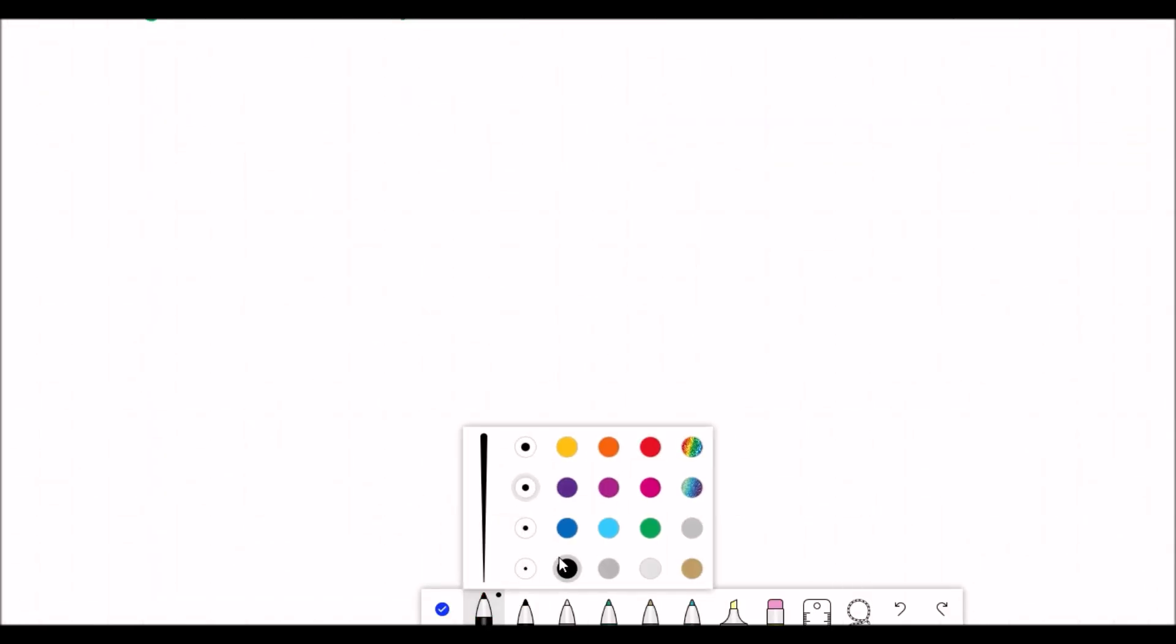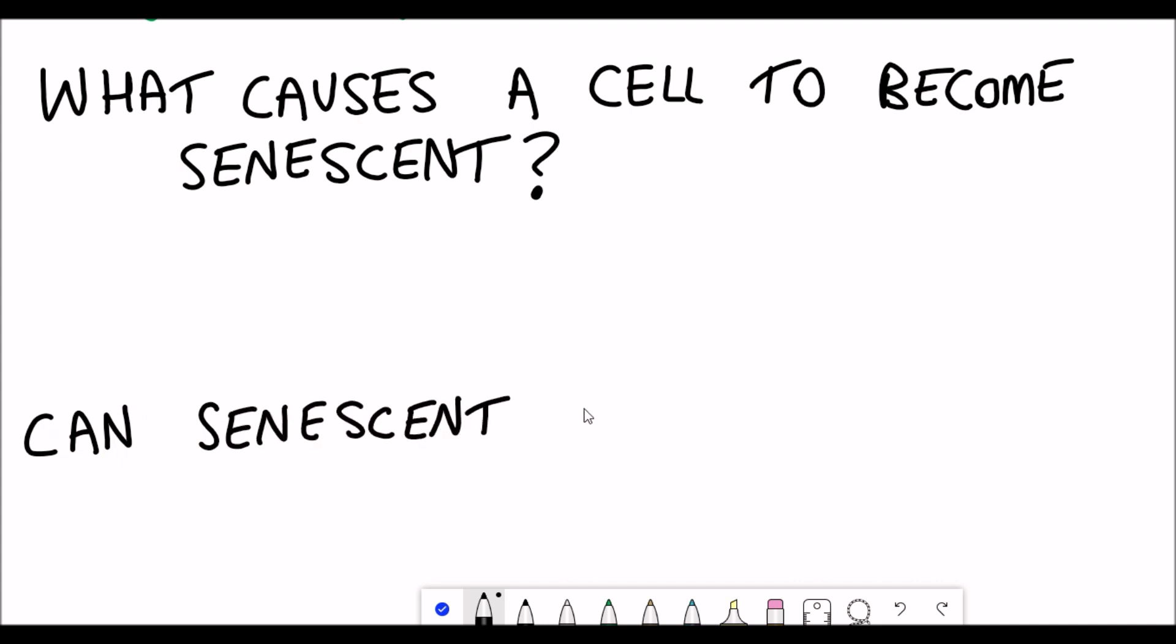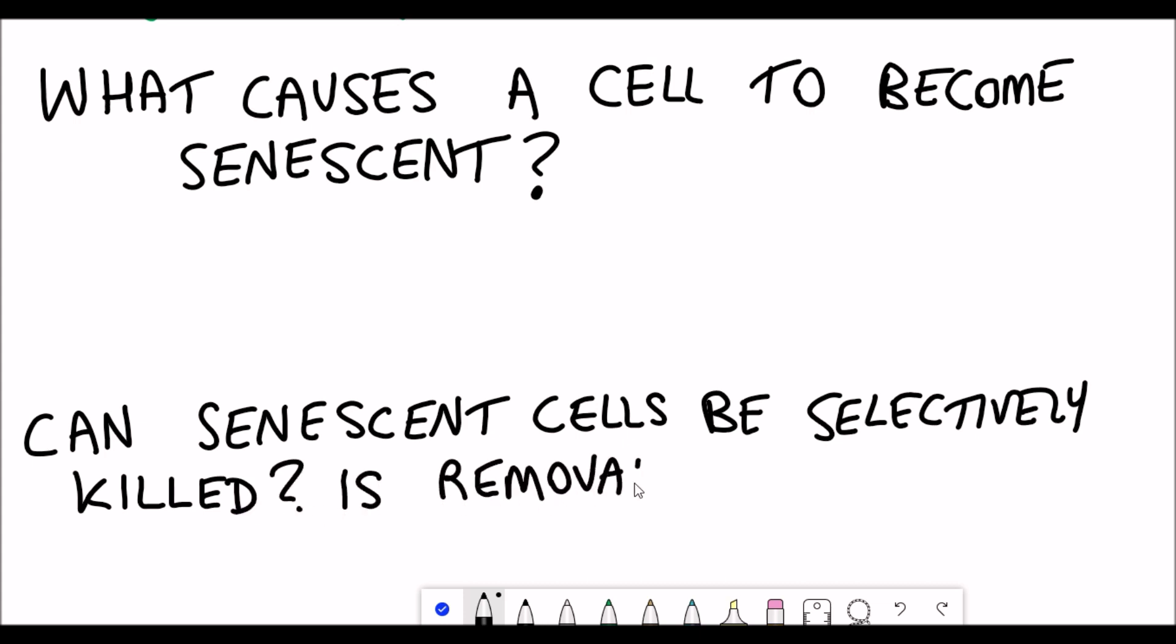Due to both these positive and negative aspects, senescent cells are very interesting to study. Some of the questions being addressed are: what actually causes a cell to become senescent in the first place, can senescent cells be selectively killed, and is the removal actually a good thing?